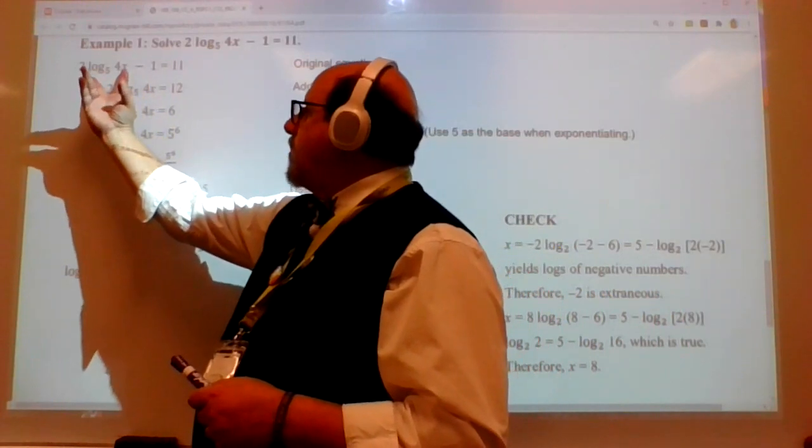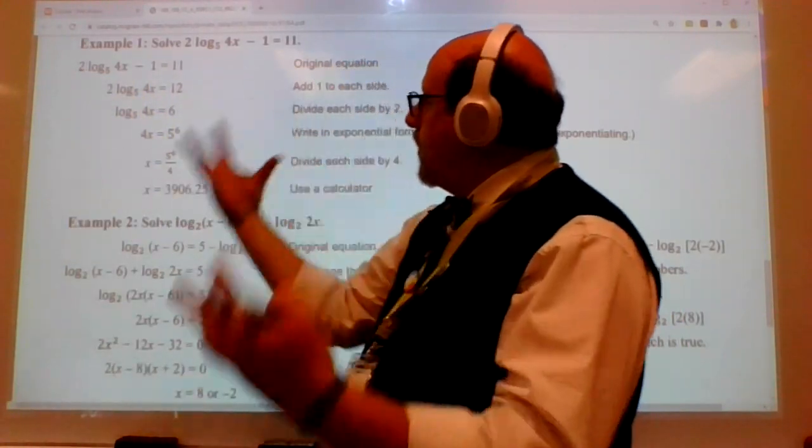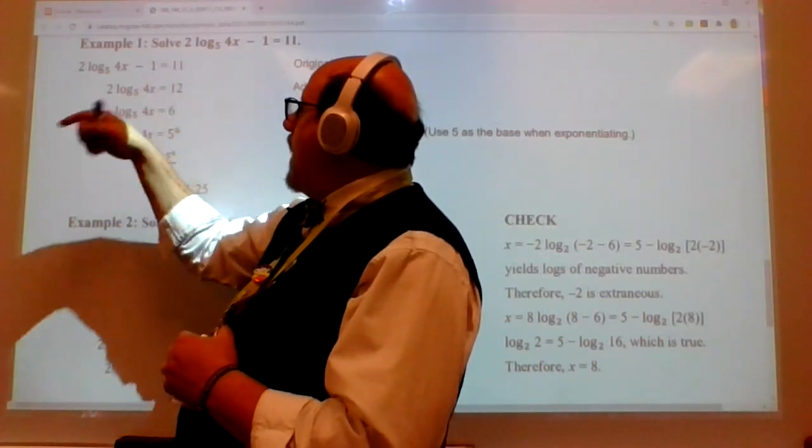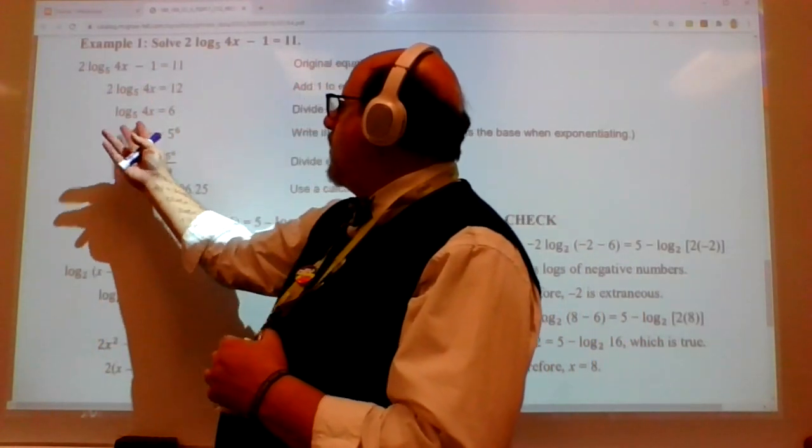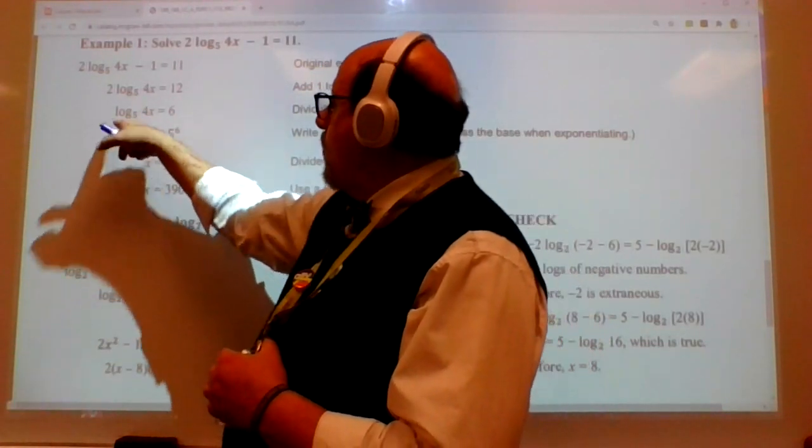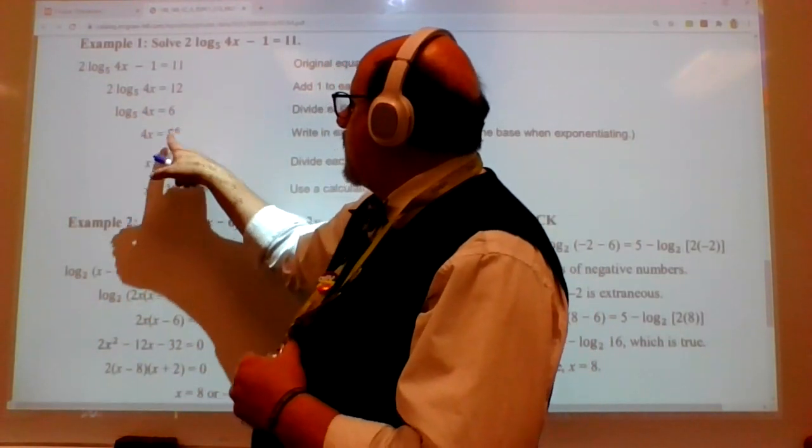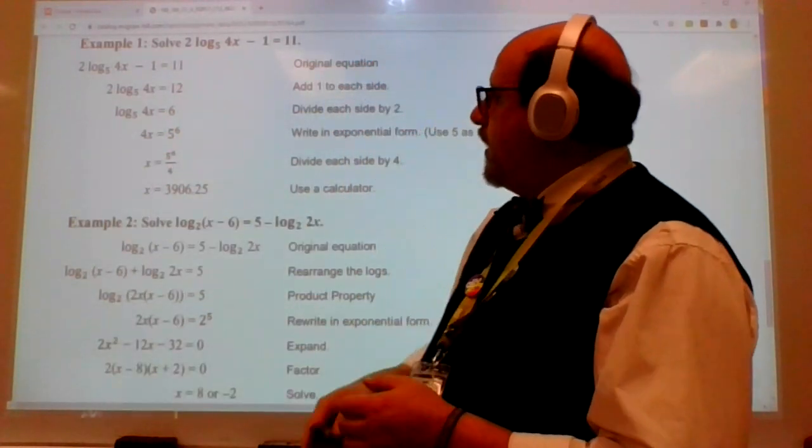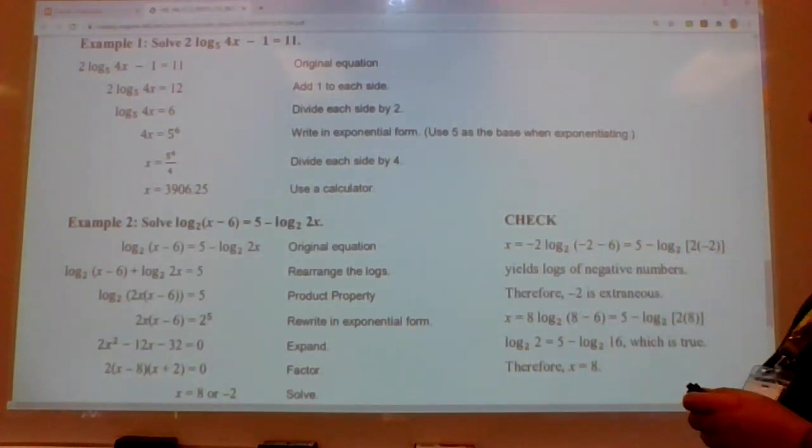So this top one says 2 log base 5 (4x) minus 1 equals 11. We need to isolate log base 5 (4x) so that we can then work in exponential form. So we're going to add 1 to both sides, divide by 2. We end up with log base 5 (4x) equals 6. We rewrite it as 5 to the 6th equals 4x, and then we solve. And that's really, really quite easy.